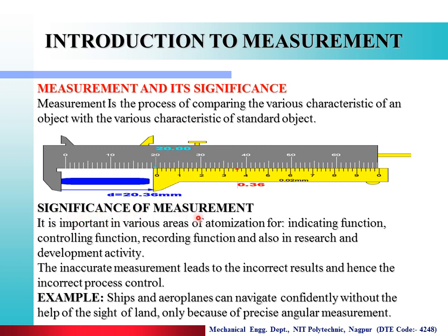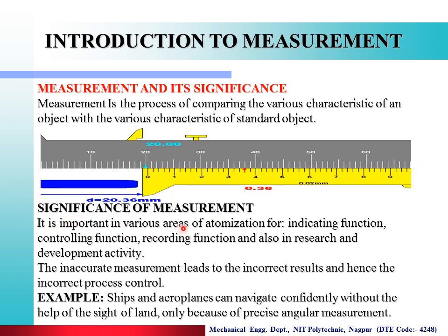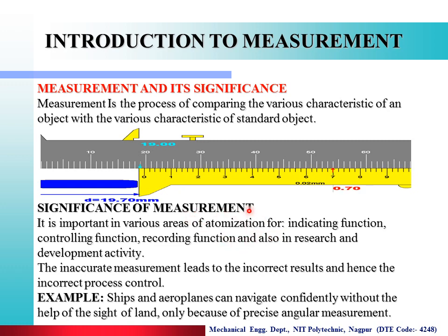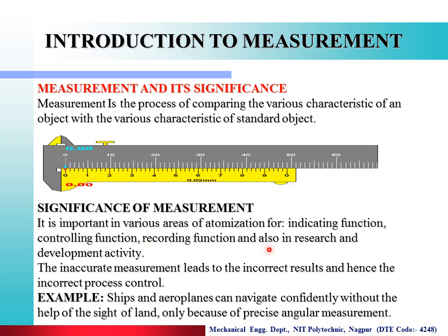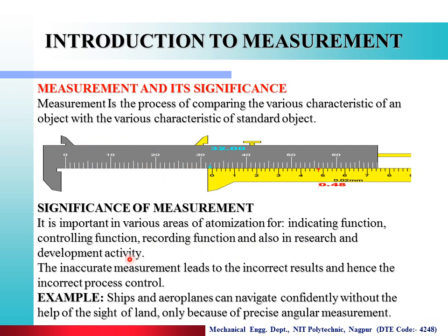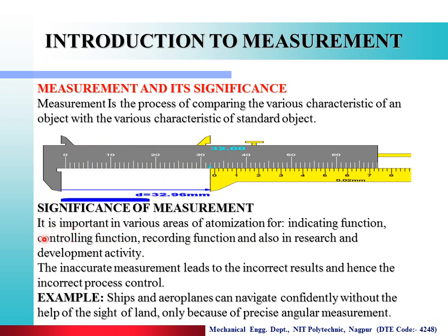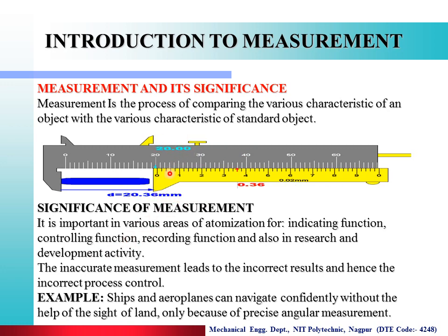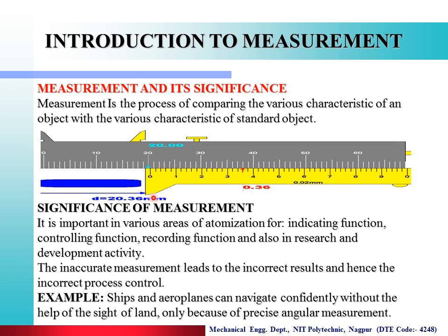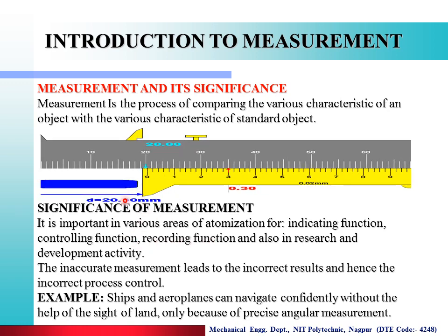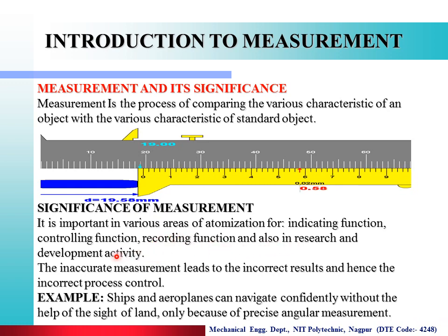Now we see the significance of measurement. It is important in various areas of automation — industrial automation, indicating function, controlling function, recording function, and also in research and development activity. Controlling function means if I have a diameter of 32.96 mm, I will continuously measure and control it. Recording function means I will record that measurement.